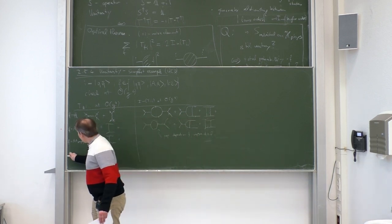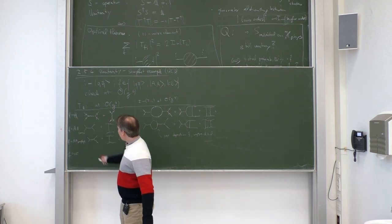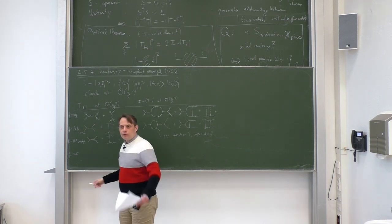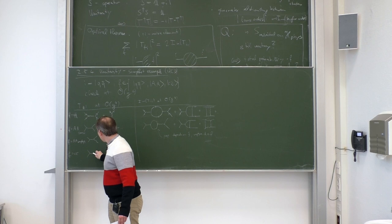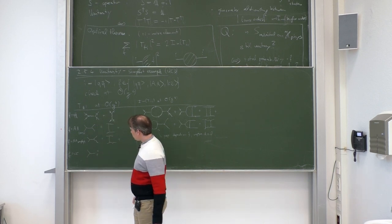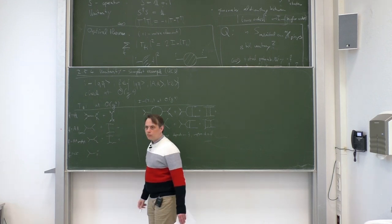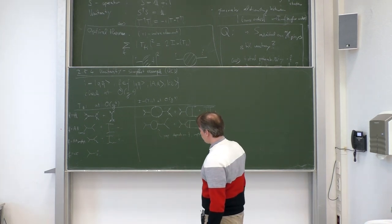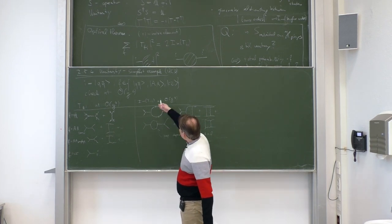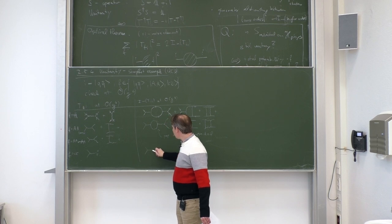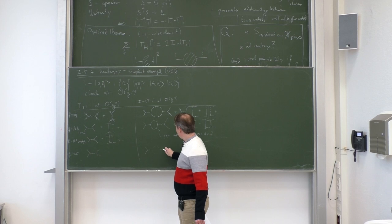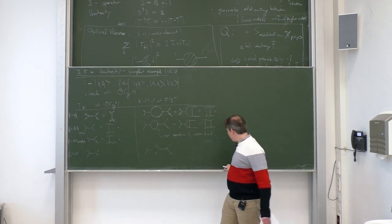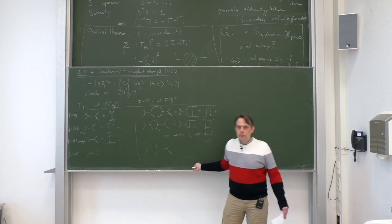Our last final state is ghost-anti-ghost. We now need Feynman diagrams at order g². There is only one Feynman diagram which exists at this order for ghost-anti-ghost external fields. For the loop diagrams, there is a Faddeev-Popov ghost loop in the gluon propagator, and again we see the same correspondence to the tree-level diagram.